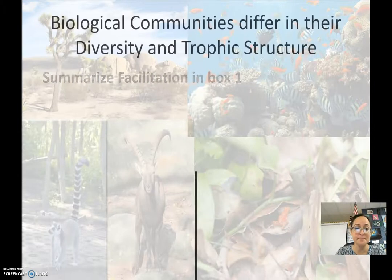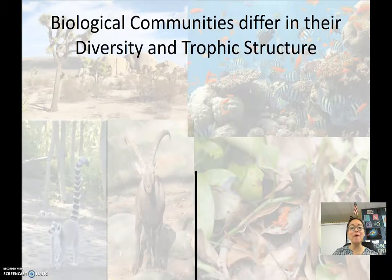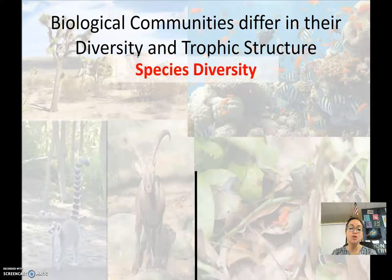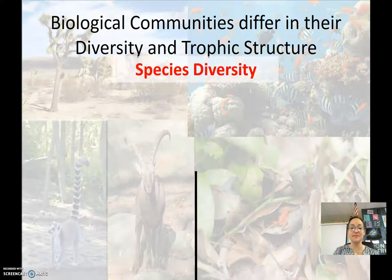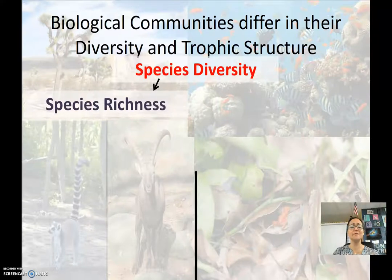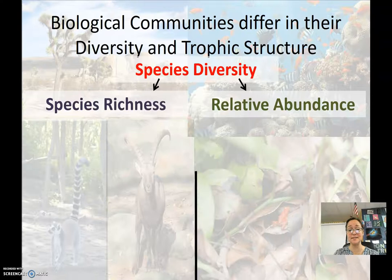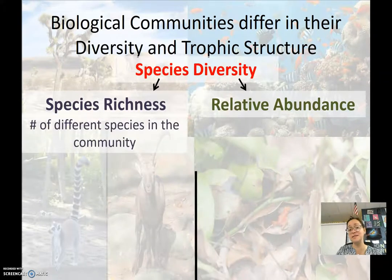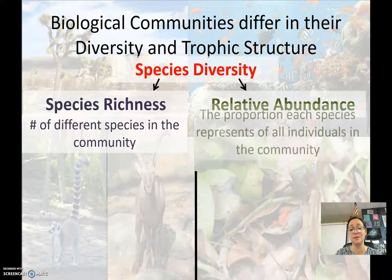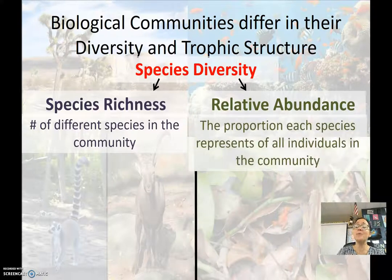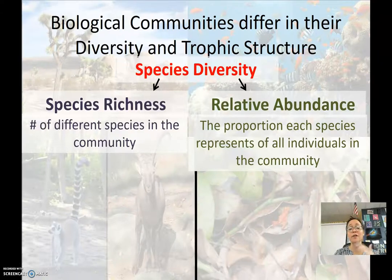Facilitation goes in box one. Now we look at how biological communities differ in both their diversity and their trophic structure. When we look at species diversity, there are two ways to classify it: species richness — how many different kinds of species there are — and relative abundance, which is the proportion of each species representing all individuals in the community.